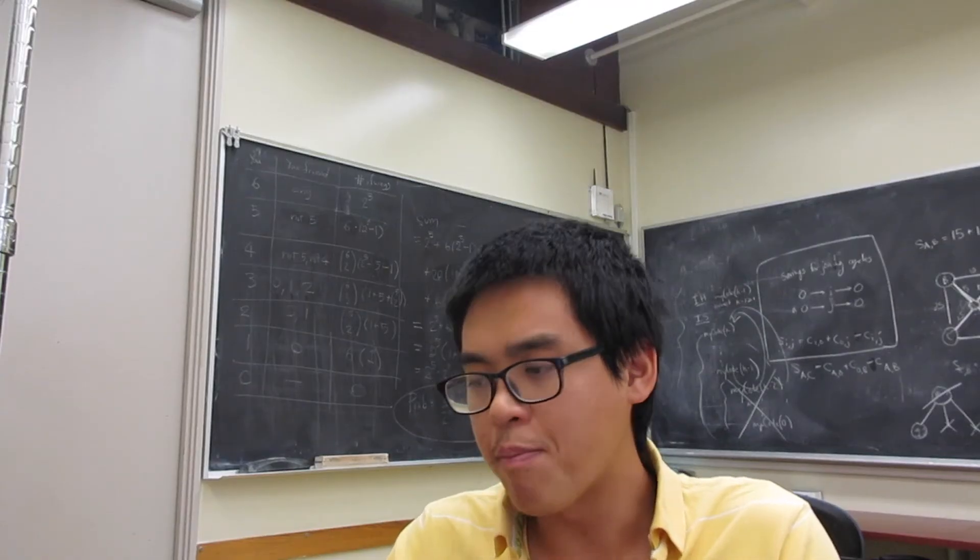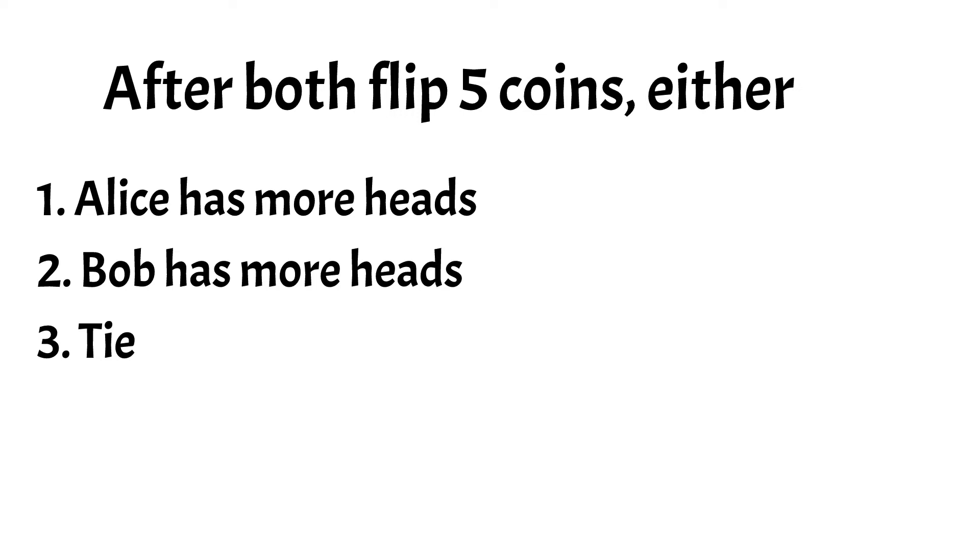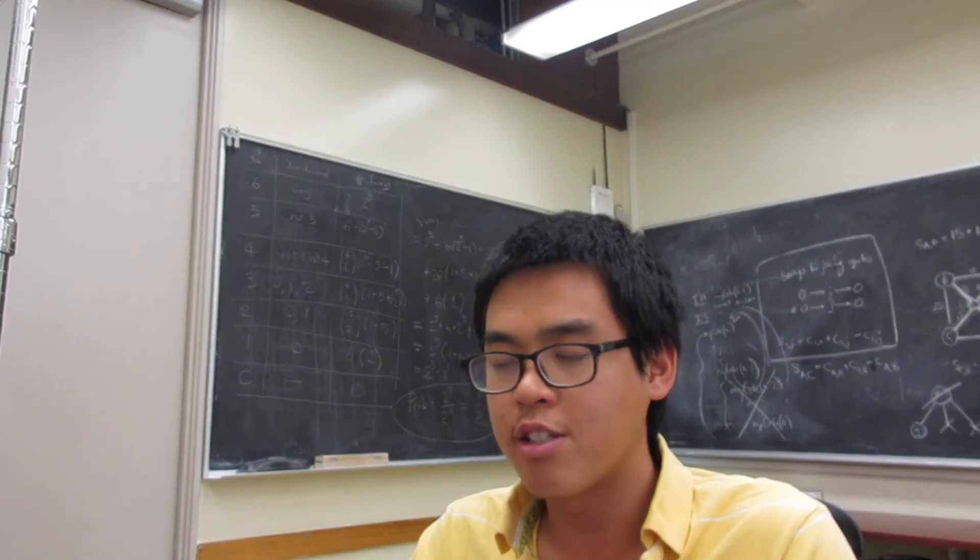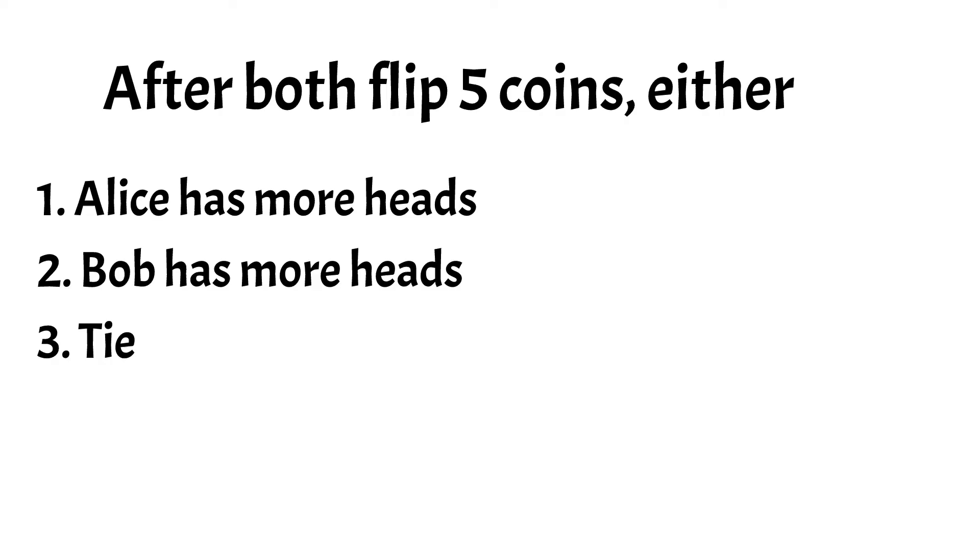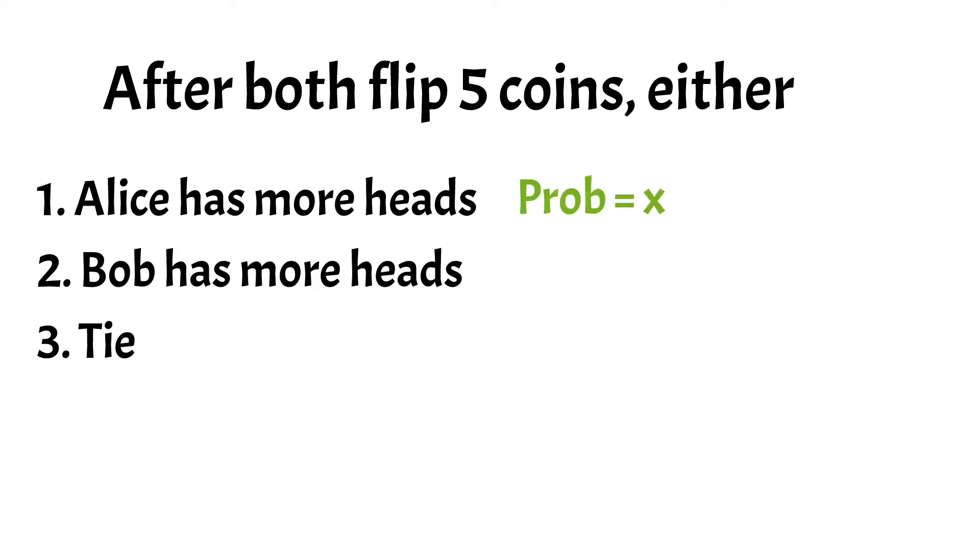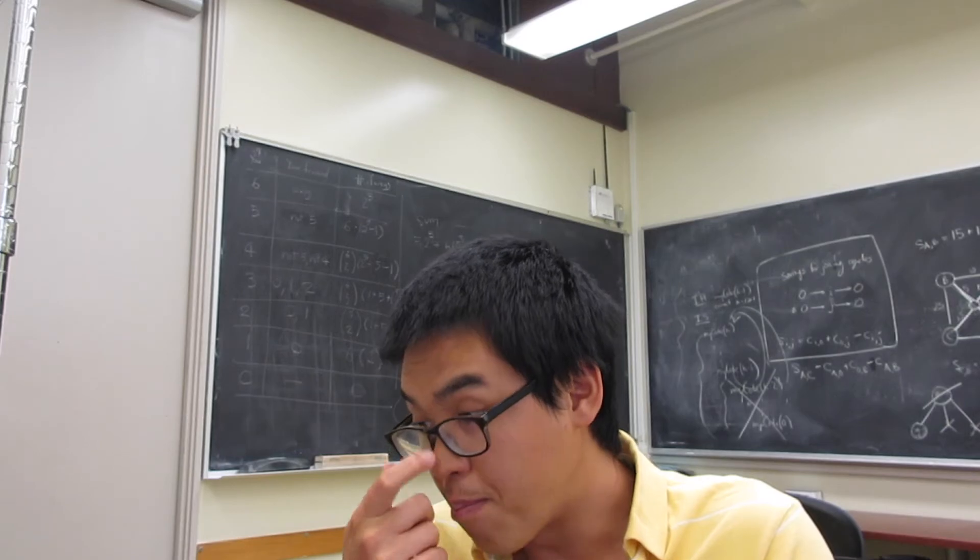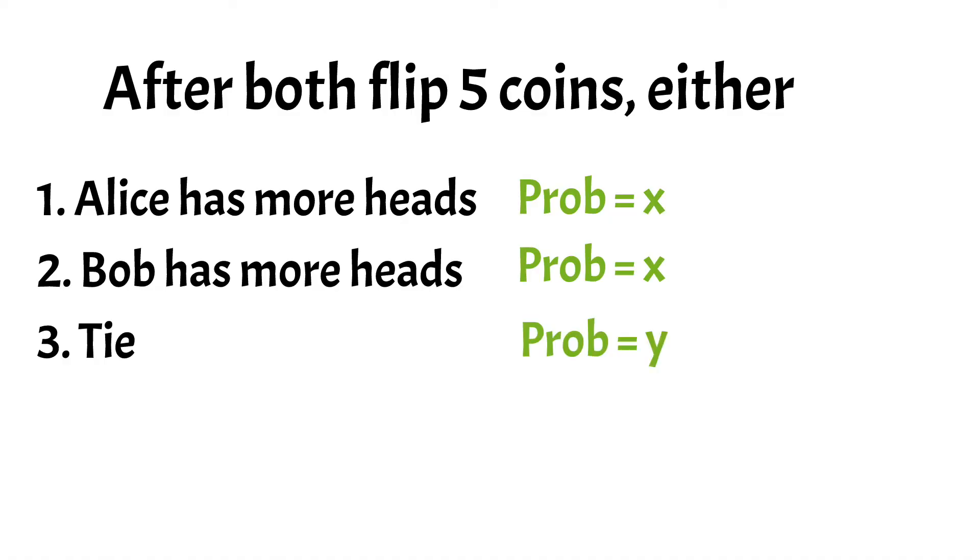Alright, so here's the interesting part. Since both have five coins, probability that the first case occurs and the probability that the second case occurs are the same. So let's give that a name. Let's call the probability that case 1 happened x. So the probability that case 2 happened also x. Then let's say the probability that they have the same number of heads is y. Since there are only three cases, so we have x plus x plus y or 2x plus y equal to 1.